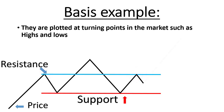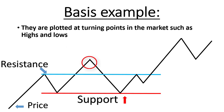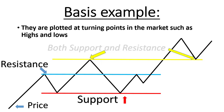Then the price breaks the level, goes way above — it's like an uptrend — and now it will bounce from the previous high. So this high was a resistance but it rejected only one time, and now it acts as a new support right here. So this level, marked by my yellow line, is a support here and a resistance here.